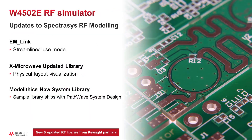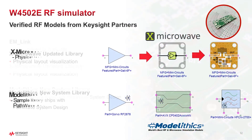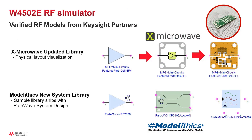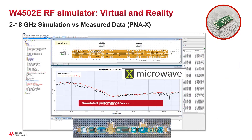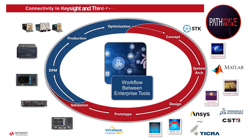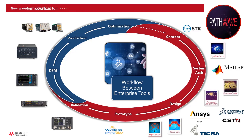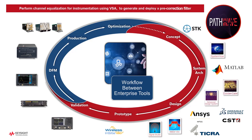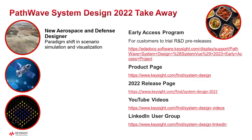For our W4502E RF Simulator, we have several enhancements. We support a new system model library from Modelithics, with a sample version shipping with the product, and an updated X-microwave library with new model views such as physical layout. EM-Link, our tool for including layout effects in RF system simulations, has an enhanced use model to streamline and improve the user experience. There is also greater connectivity to Keysight's instrumentation, including a new signal download component for the Keysight M8199 broadband arbitrary waveform generator and the ability to support channel equalization in conjunction with the VSA.